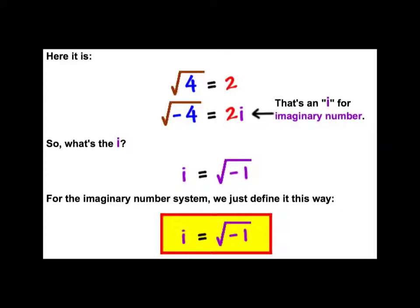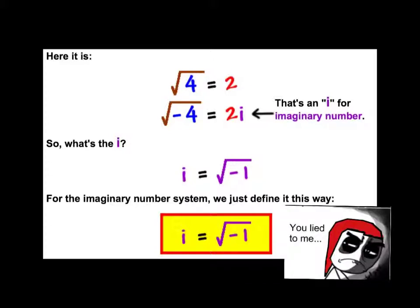So here it is. The square root of 4 is 2. The square root of negative 4 is 2i. And that i is the imaginary unit. What does the i represent? Well, the i is equal to the square root of negative 1. So the number times itself that equals negative 1 now has a name. It's i. And that imaginary unit is used to define the entire imaginary number system. Stop glaring at me like that. I promise you it's not that complicated.